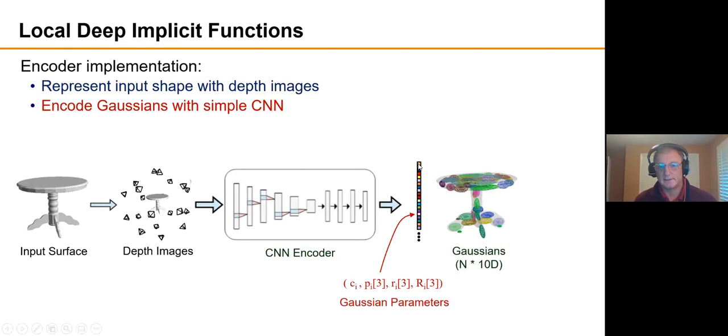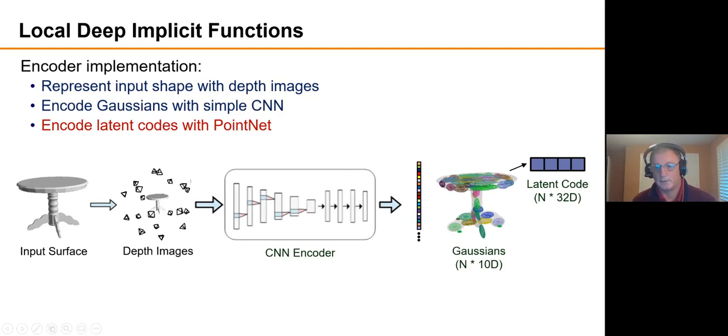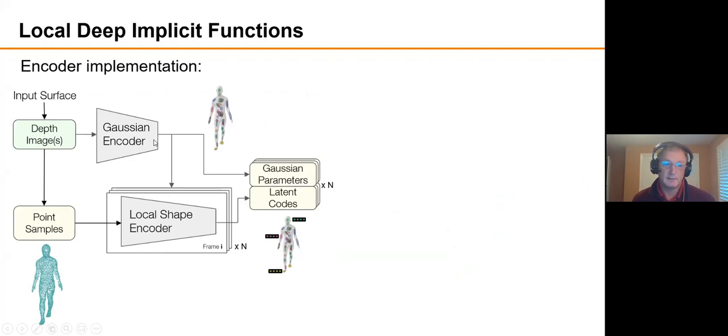Each of the colored boxes here is 10 parameters for the Gaussians plus 32 parameters or so for the latent code. So there's actually 42 values in each of these little colored squares, which describe the decomposition of the space and the latent codes.